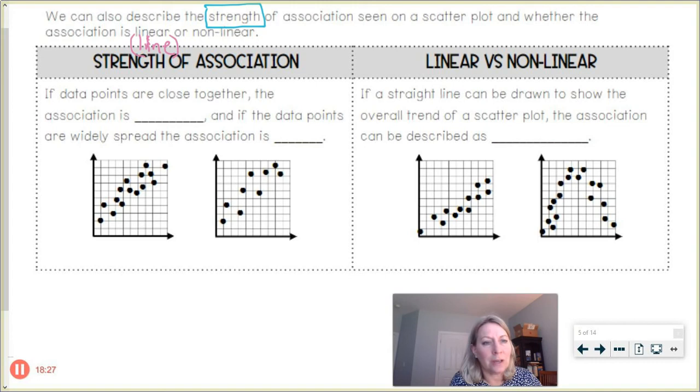Okay, so the strength of association. If data points are close together, the association is strong. And if the data points are widely spread, the association is weak.